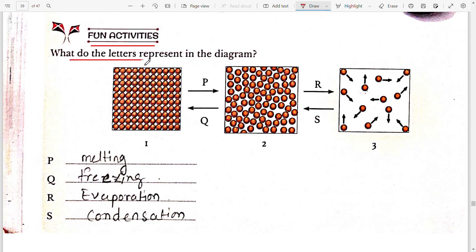Next is fun activity. What do the letters represent in the diagram? See, this is the solid state and this is the molecular arrangement of liquid state and this one is the molecular arrangement of the gaseous state. So from solid to liquid it means the arrow P is showing the melting. In the place of P we can write melting.